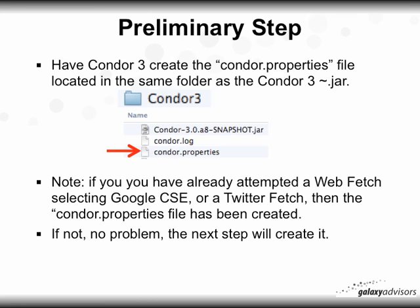To begin, I want to talk about a preliminary step. You have these four Twitter API keys, which we'll talk about how to get. Where do you put those? Those keys go into a file called ConorProperties. The preliminary step we're going to go through is to have Conor3 create the ConorProperties file, located in the same folder as the Conor3 jar.